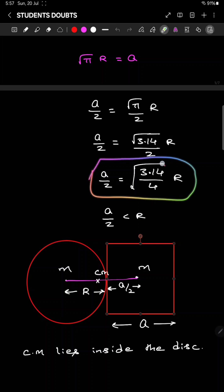From this you can understand this value was less than 1. That means a by 2 will be less than R.